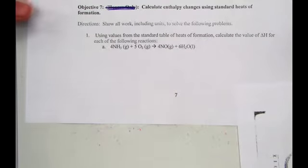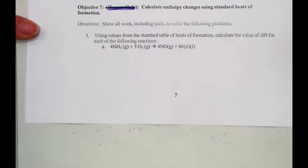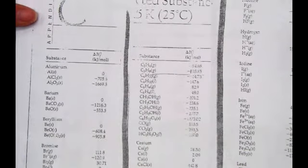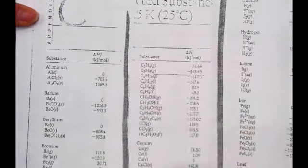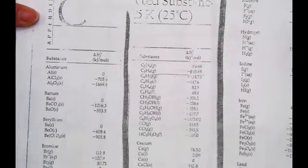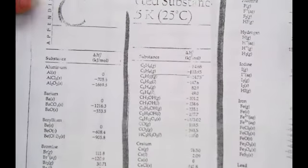Here we go. Our seventh objective on our test has us calculating enthalpy changes using the standard heats of formation. The test taking tool page we will need is our appendix C from the back of our chemistry book, which lists alphabetically the standard heats of formation for various elements and compounds.